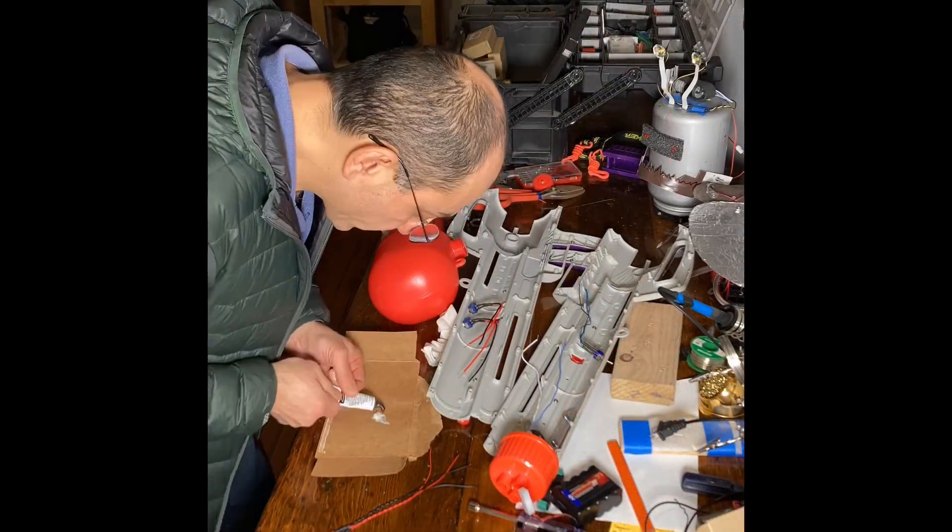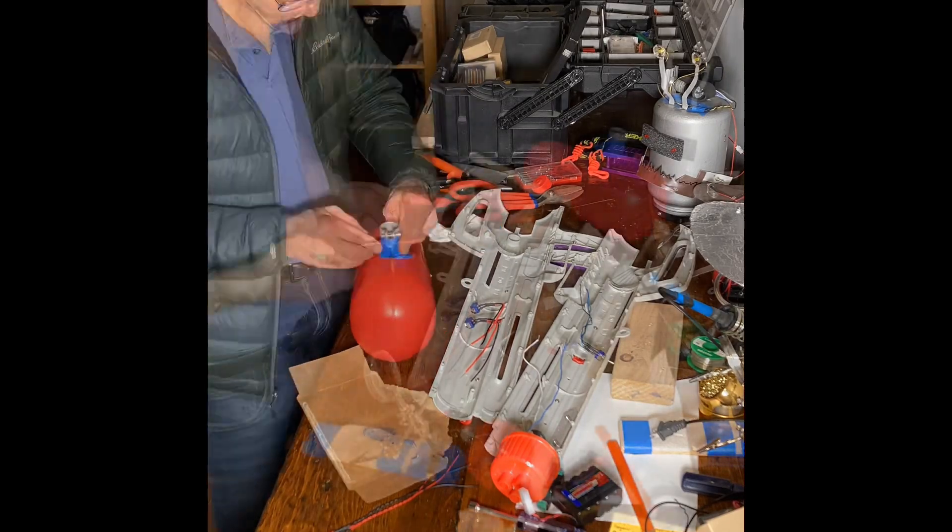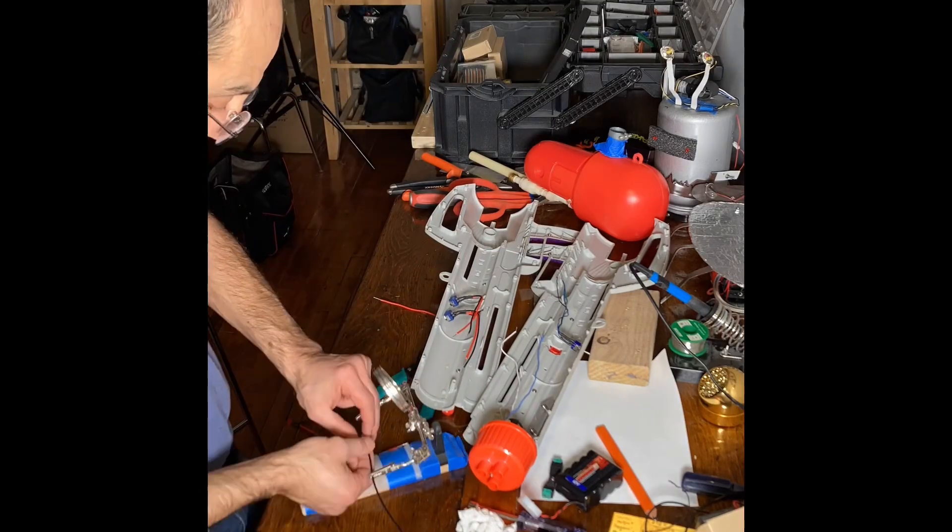Now I start to install the receiver for the flexible armor coating. That's a two-part epoxy JB Weld.